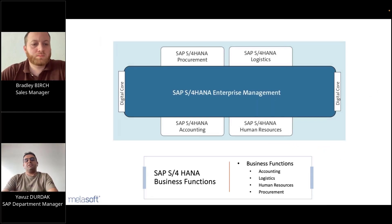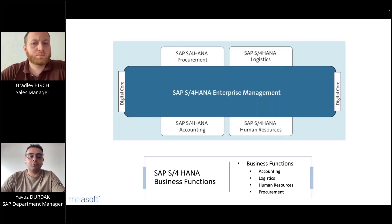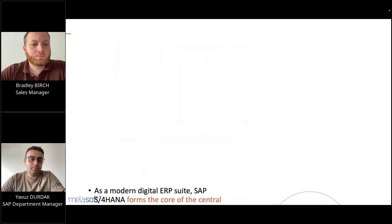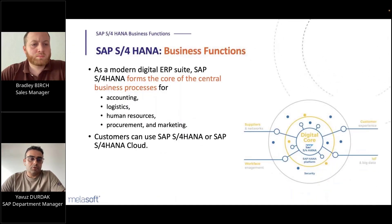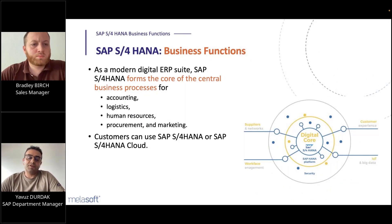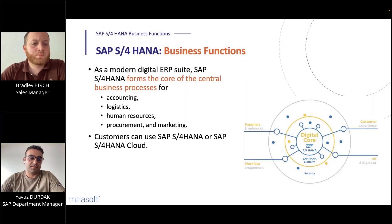In this part, I will talk about the main SAP business functions, including accounting, logistics, human resources, and procurement — which form the digital core of the SAP S4 HANA system. As a modern digital ERP suite, SAP S4 HANA forms the core of central business processes: accounting, logistics, human resources, procurement, and marketing operations. Customers can use these modules over SAP S4 HANA or SAP S4 HANA Cloud systems.